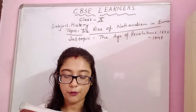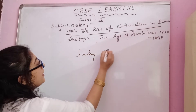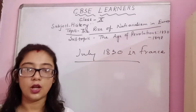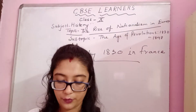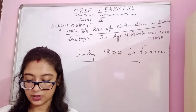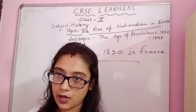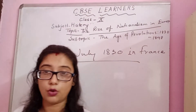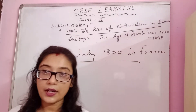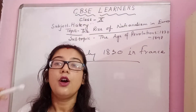The first upheaval took place in France in July 1830 — you can also call this the July Revolution. The Bourbon kings, who had been restored to power during the conservative reaction after 1815, were now overthrown by liberal revolutionaries. During this July Revolution of 1830, they were once again uprooted and thrown out from the throne of France.